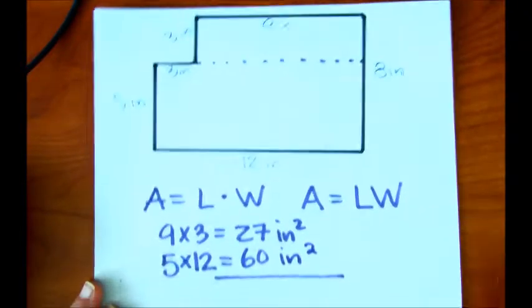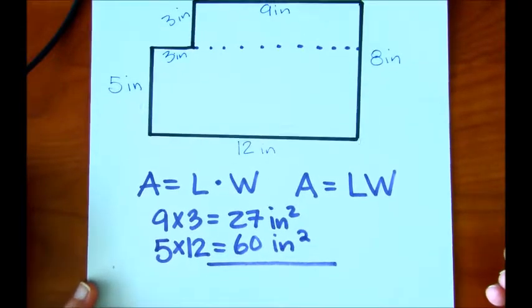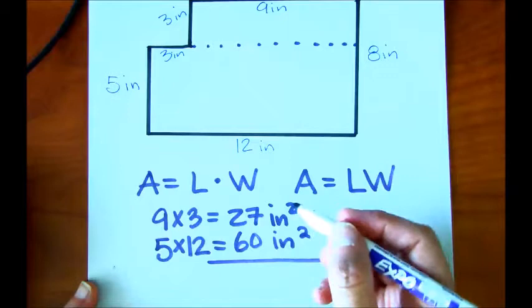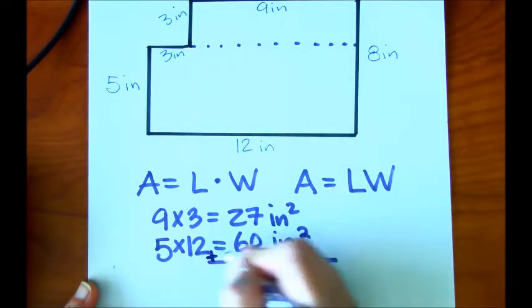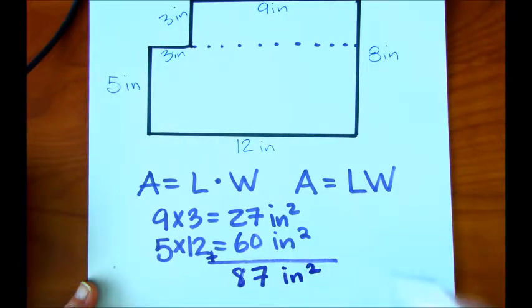And remember, when we're finding the area of the combined figure, we want to add those totals, those total areas, and we're going to get 87 inches squared.